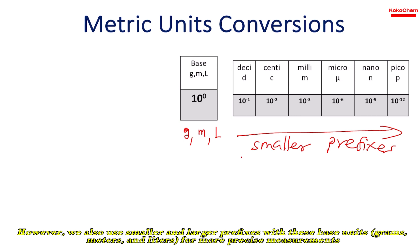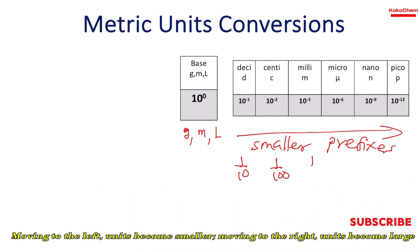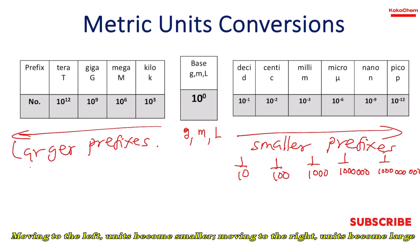For example, deci is 1 over 10, centi 1 over 100, milli 1 over 1000. Larger prefixes are multiplied by powers of 10, like kilo is thousand and mega is 1 million.